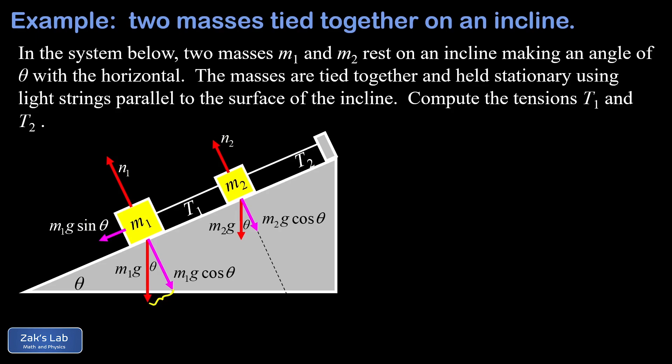The component of gravity pulling down the ramp for M2 is similar. That's M2g sine theta. And finally, we can get into the tensions. So if I go back and think about M1, the tension T1 is pulling up the ramp on it. So that gives us another force pulling parallel to the surface on M1. At the same time, T1 is pulling down the ramp on M2 because both ends of the string are going to pull. So that adds a second force pointing down the ramp on M2. Now the final force we need in our diagram is T2 pulling up on M2. And now our force diagram is complete.